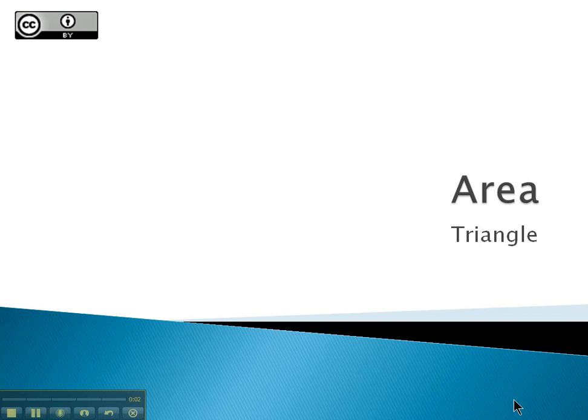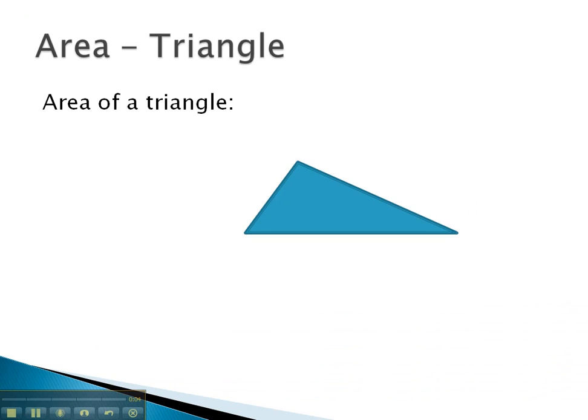In this video, we're going to take a look at how we can find the area of a triangle. The formula for the area of a triangle is 1 half times the base times the height.